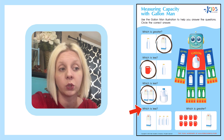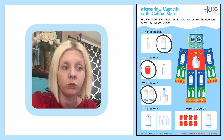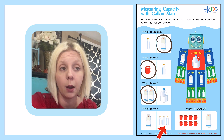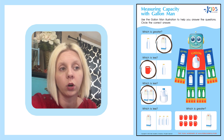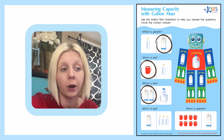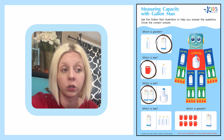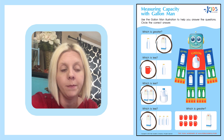The next question says which is less, or the smaller amount? We've got one quart or we've got three pints. Well, a quart is equal to two pints. So if I took one away these would actually be the same, but because I added one it's going to be more than a quart. So the lesser amount is actually going to be the quart.